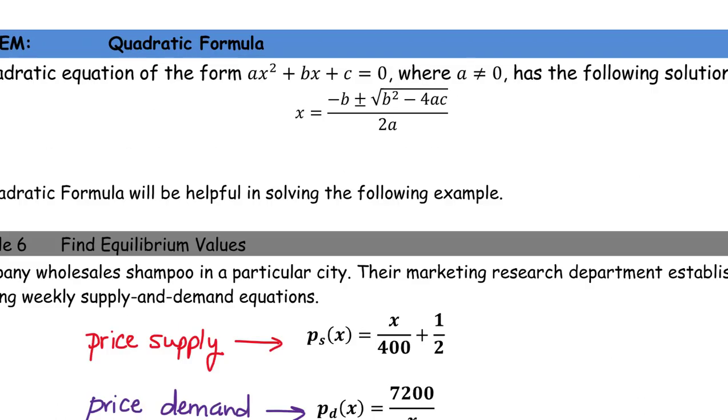So any quadratic equation, like the one that we have, can be written in the form AX squared plus BX plus C equals zero. And once you have it written in that form and identify A, B, and C, you know that the solutions will be of the form X equals negative B plus or minus the square root of B squared minus 4AC all over 2A. So we're going to use that formula to solve our quadratic equation.